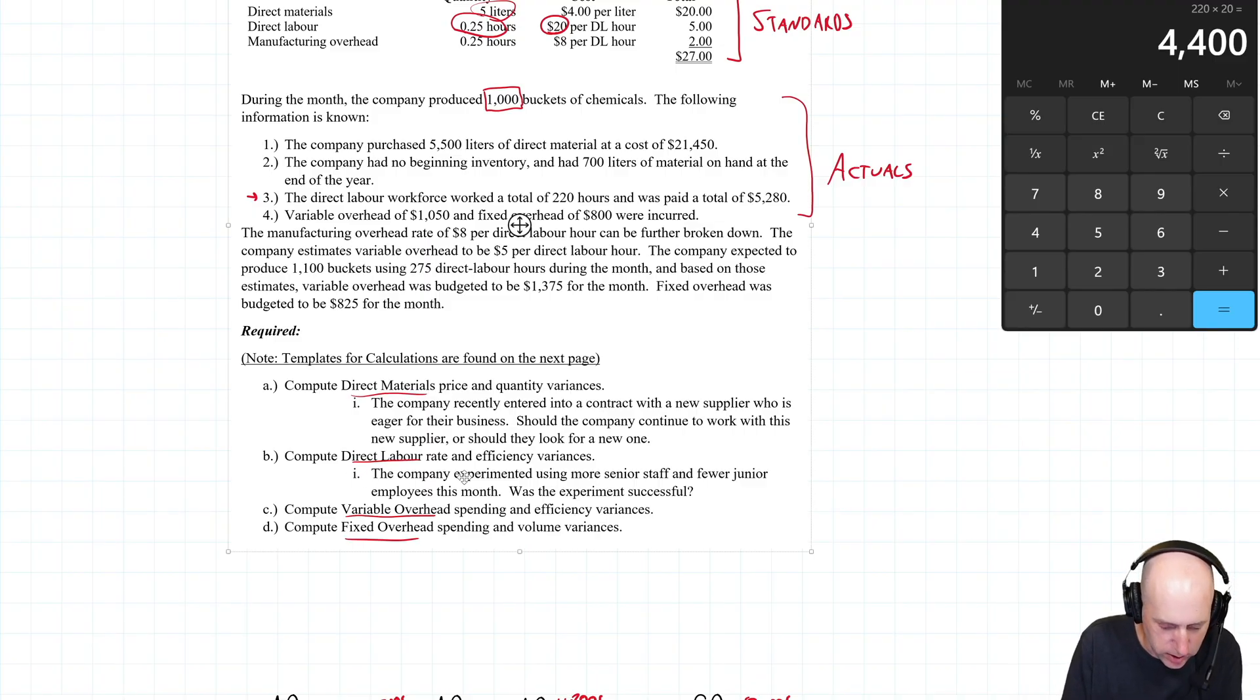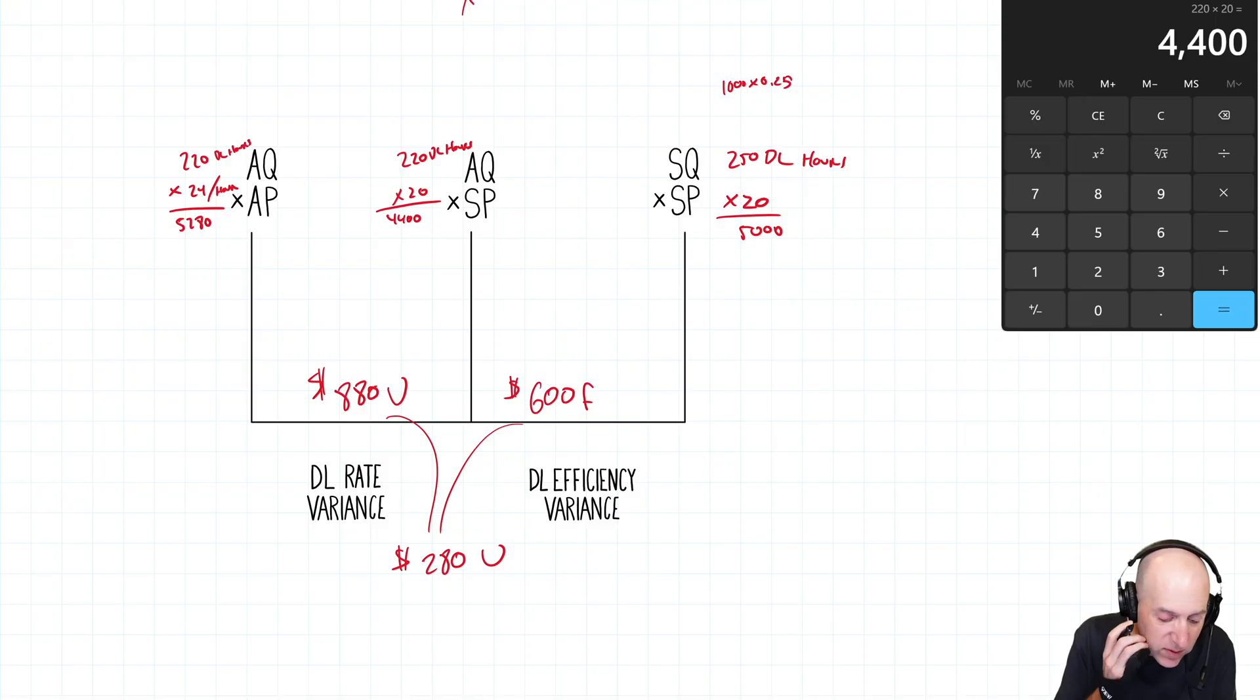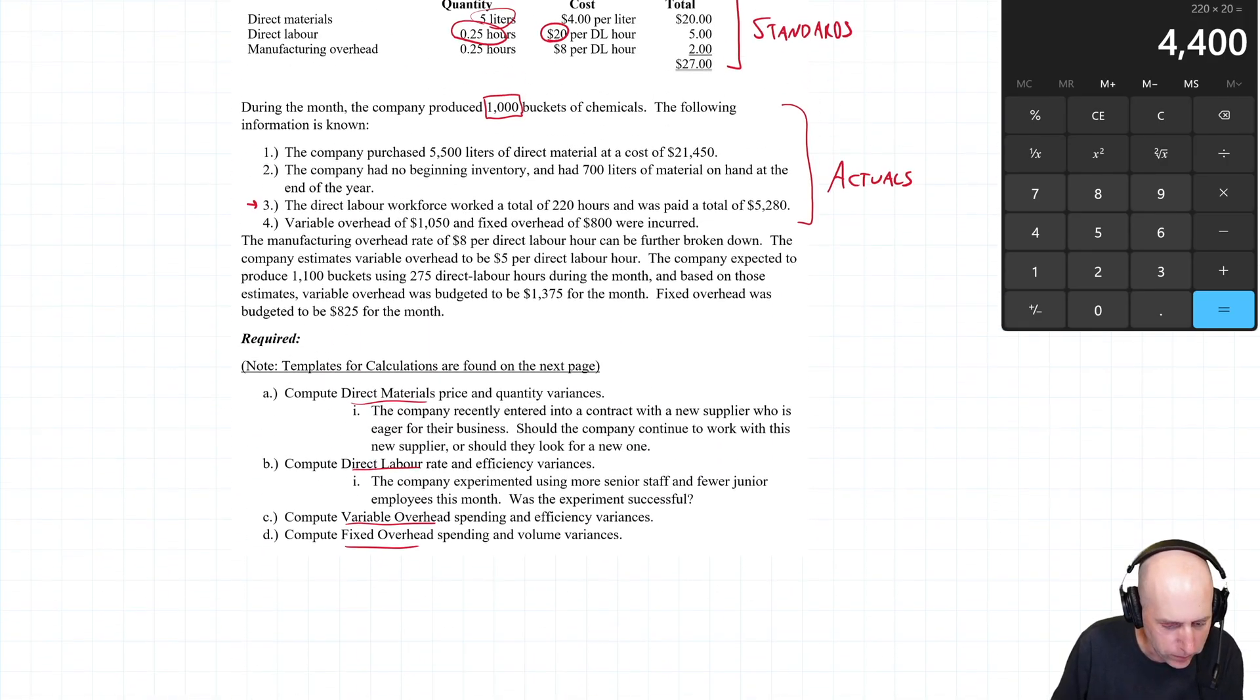So the second part of the question, it says, the company experimented using more senior staff and fewer junior employees this month. Was it successful? You know, it's a mixed bag. We'd say it's more efficient, but the efficiency gains were more than made up for by the wage rate cost. So I would say it was an experiment that didn't work. It wasn't like a home run here. It cost us more. We didn't save it in efficiency. So this was a costly decision, and I would go back to the other way. Generally speaking, when something's favorable in these types of questions, you're going to argue for it. When something's unfavorable, you're going to argue against it, because all we have is the numbers. Classic situation where accountants always get accused of being myopic and only seeing the numbers, and that's why in these questions we can't see the bigger picture. Maybe there's big picture reasons for doing it. The numbers say don't.